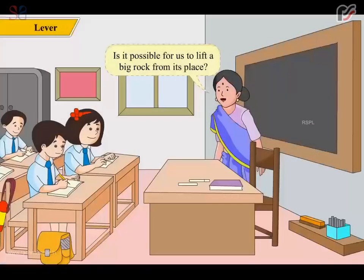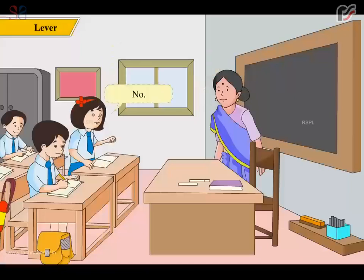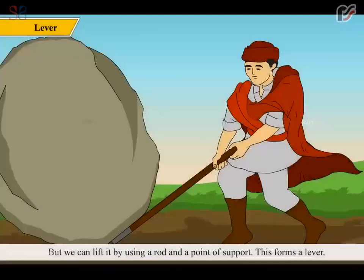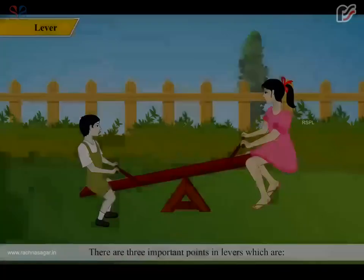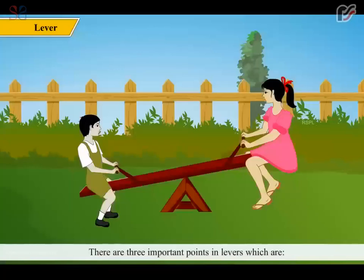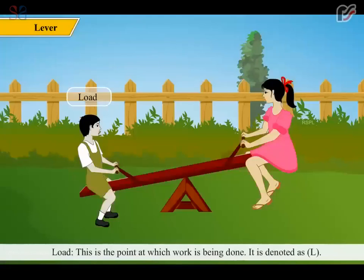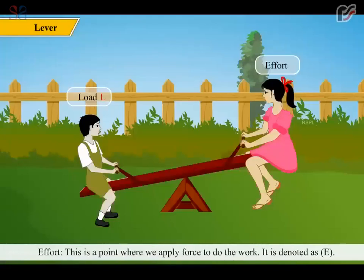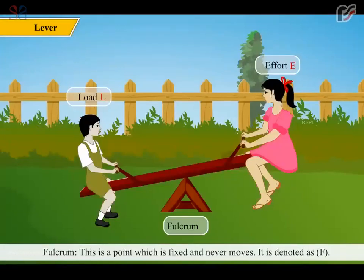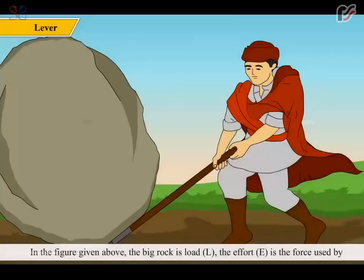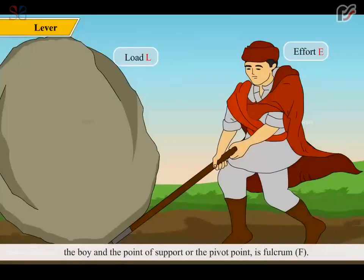Is it possible for us to lift a big rock from its place? No! But we can lift it by using a rod and a point of support — this forms a lever. There are three important points in levers: Load (L) is the point at which work is being done. Effort (E) is the point where we apply force to do the work. Fulcrum (F) is a point which is fixed and never moves. In the figure, the big rock is the load (L), the effort (E) is the force used by the boy, and the point of support or pivot point is the fulcrum (F).